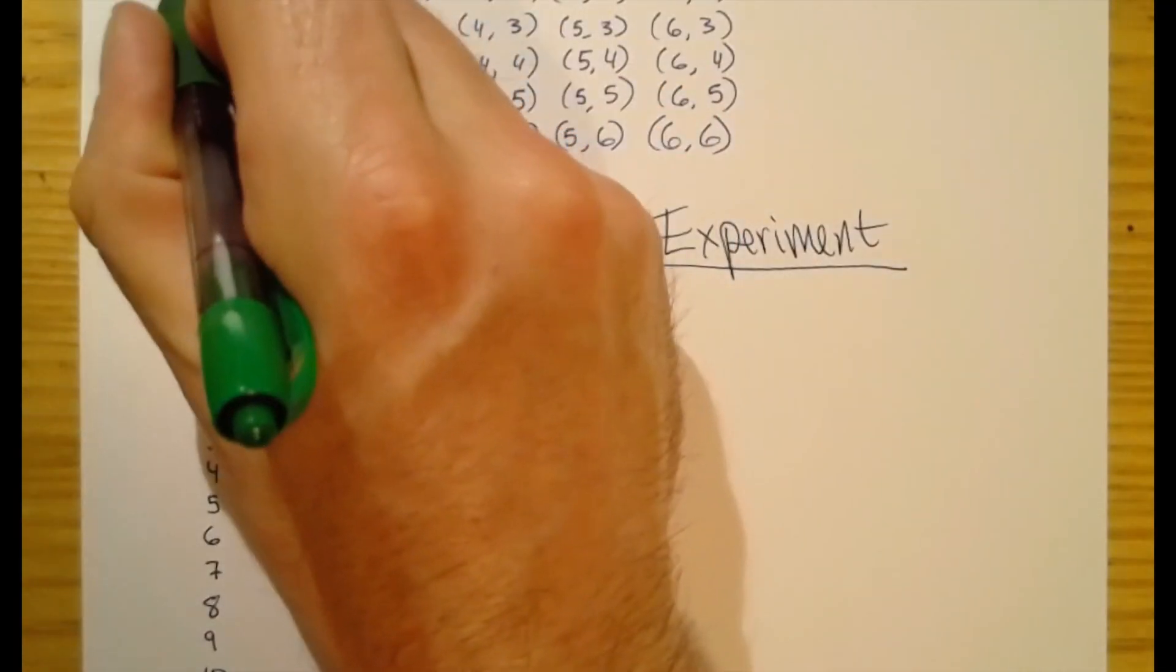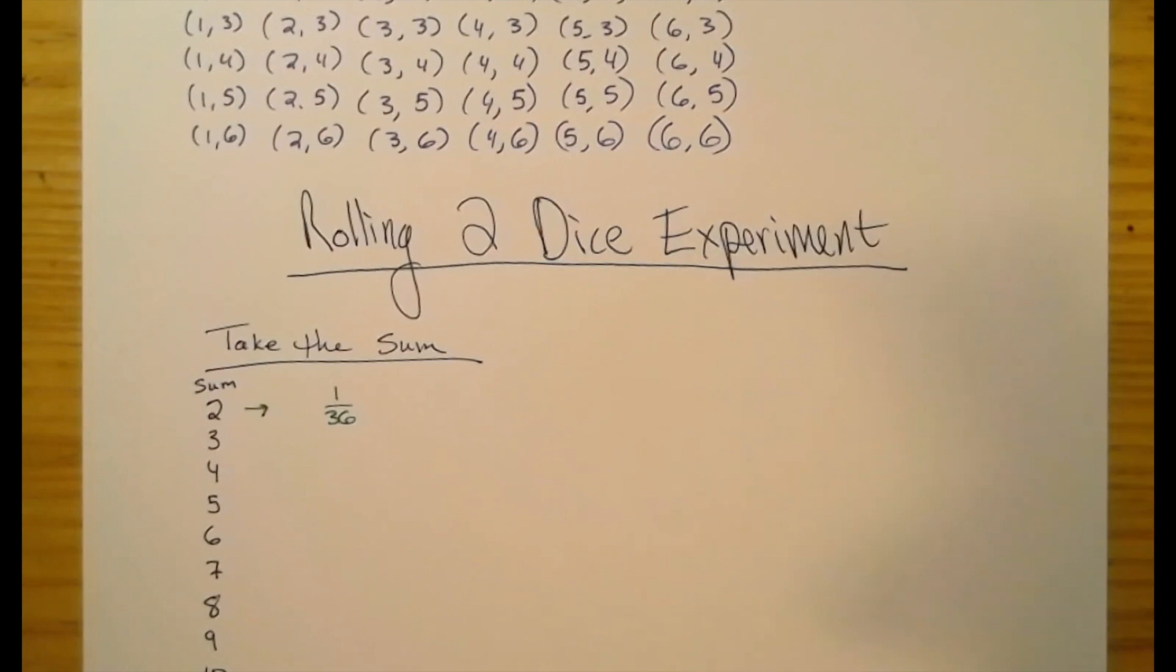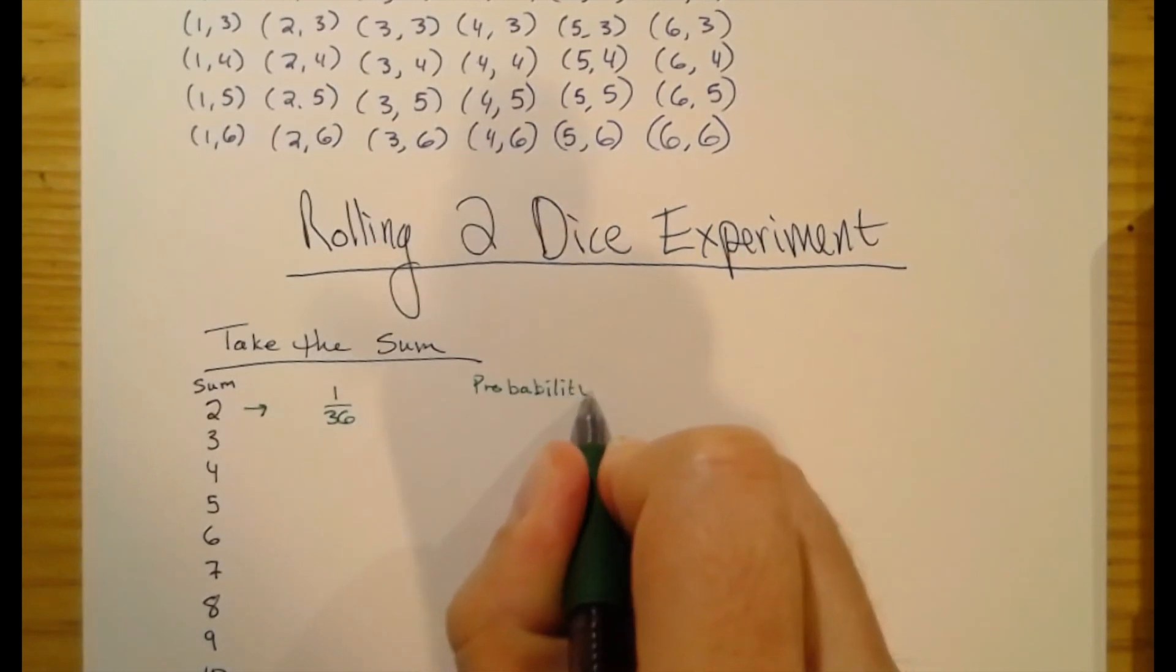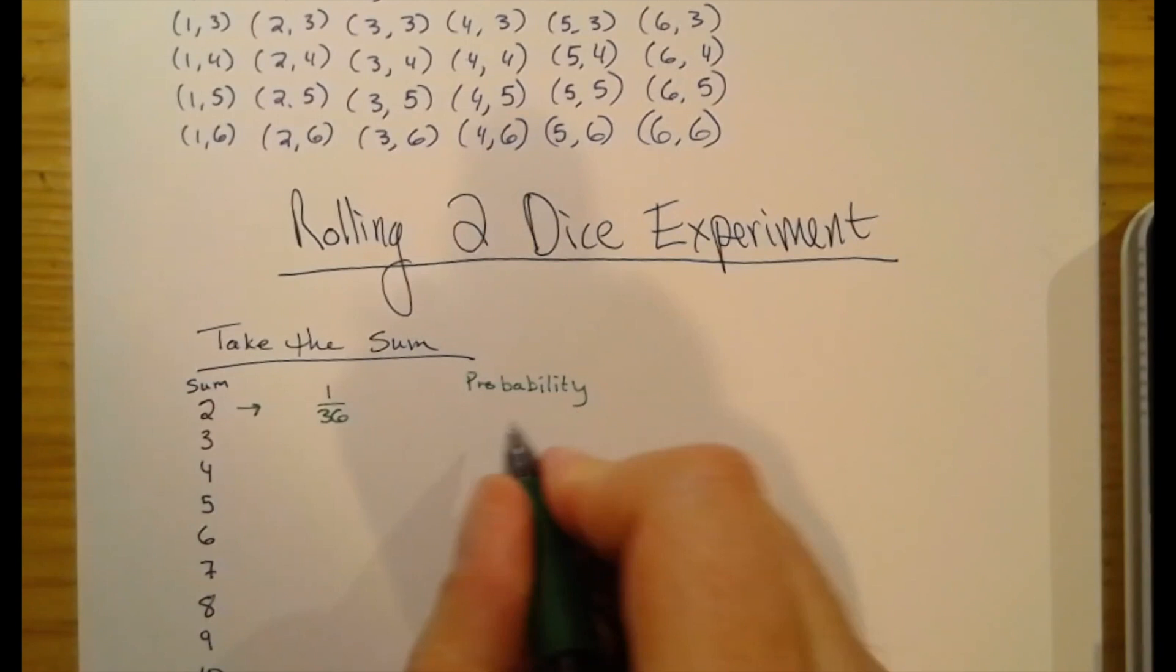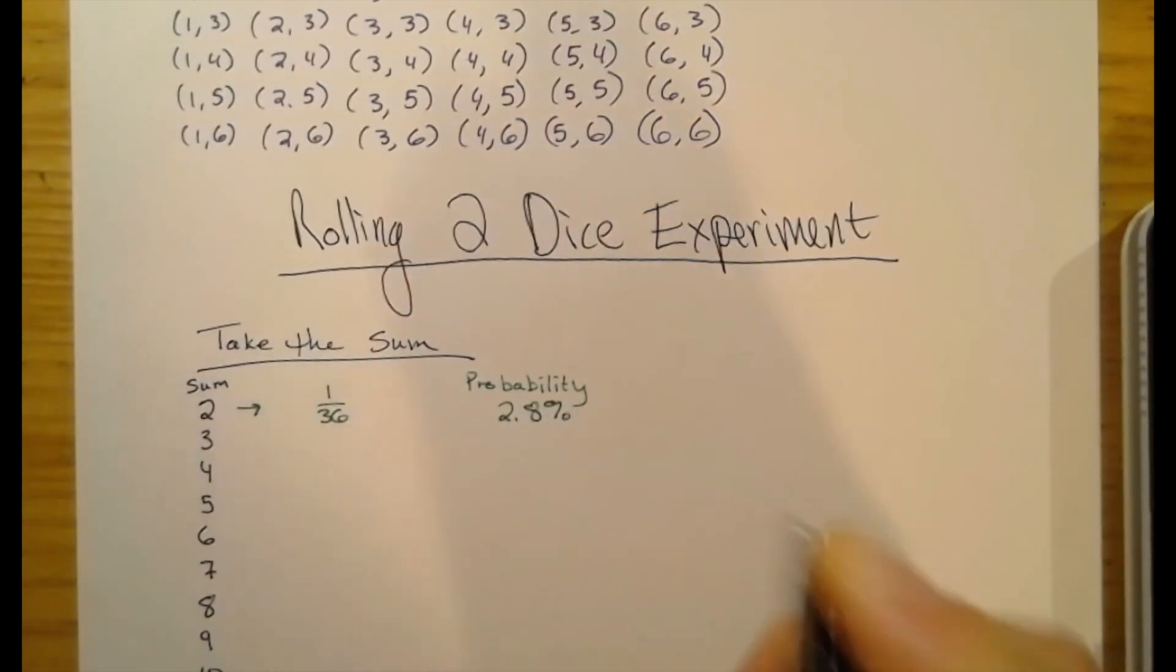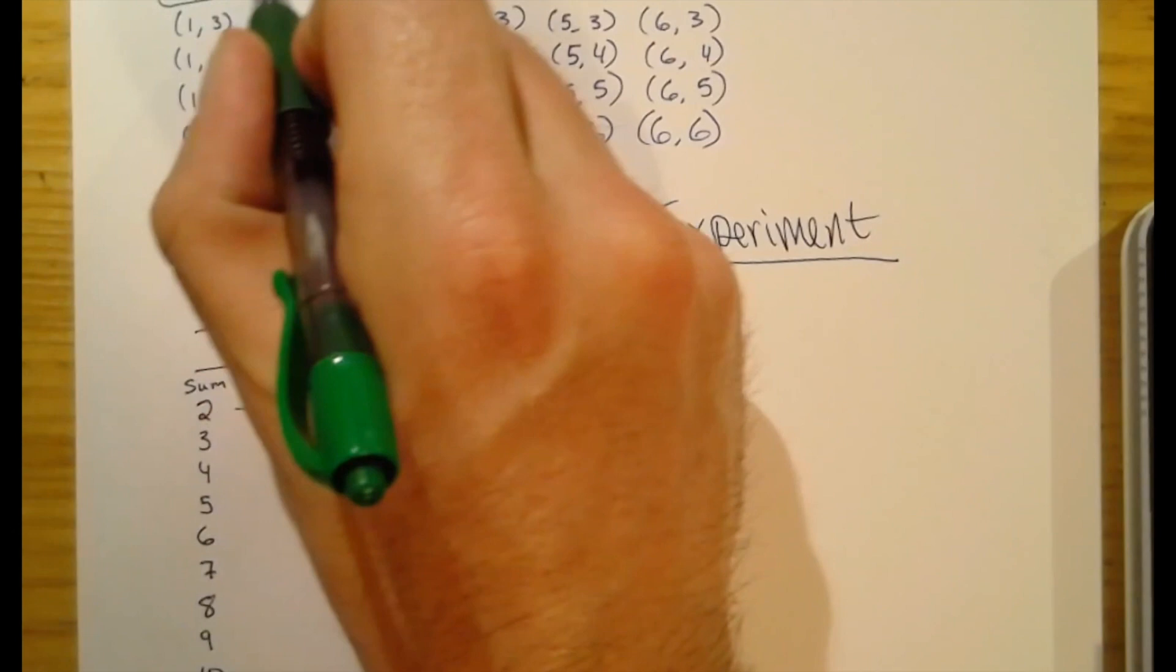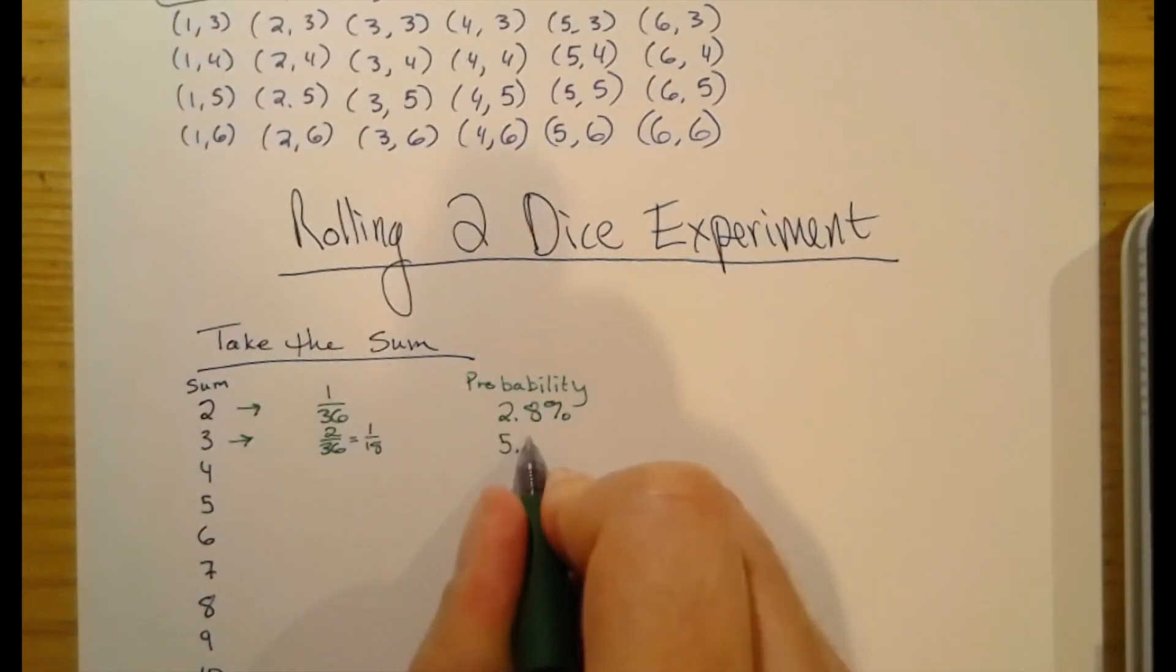So for the sum of two, I literally have one outcome. There are 36 altogether. So in a percentage, we'll just do 1 divided by 36, and that's 2.8%. Here's an interesting little fact. When we're looking for things that add up to three, we actually have two of those. We have 2, 1 and 1, 2. So that's 2 out of 36, or 1 over 18. And that's equal to 5.5 repeating forever, so 5.6%.